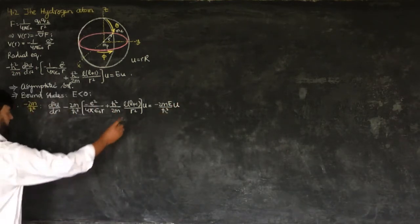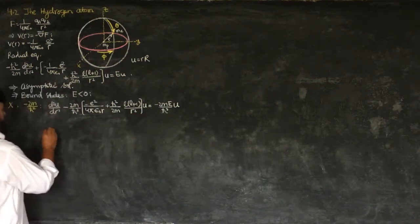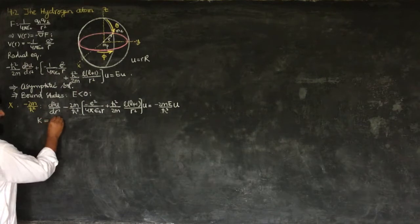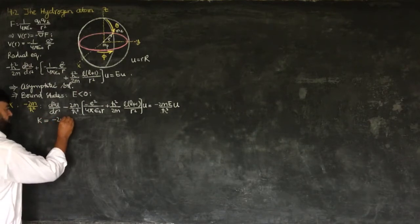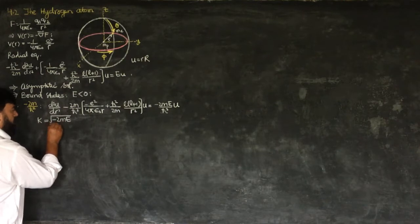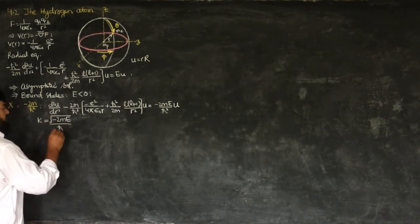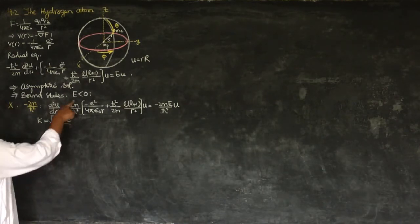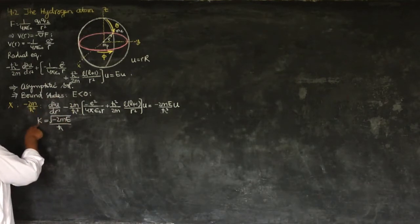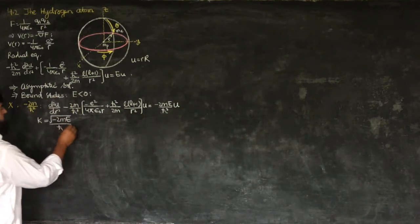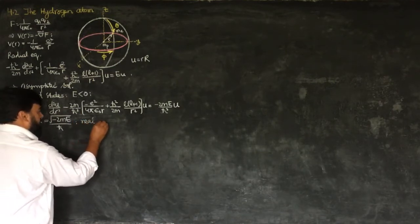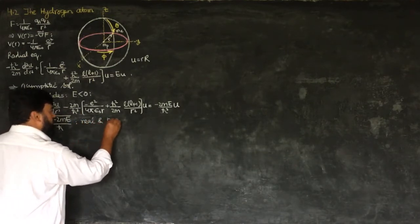We suppose this equals a constant k, where k² equals minus 2mE over ℏ². When E is negative for our bound states, k is real and positive.